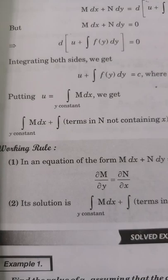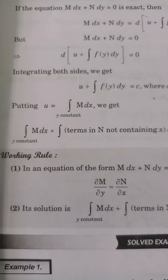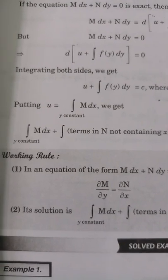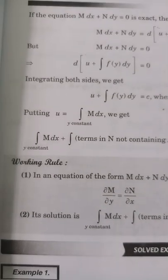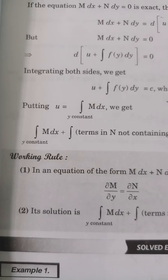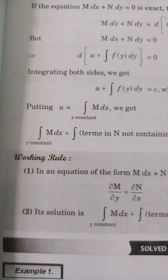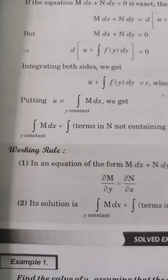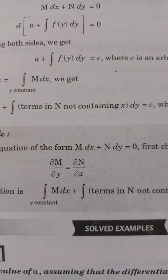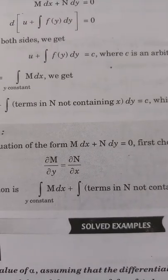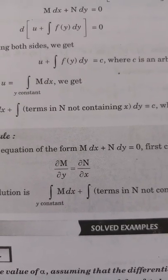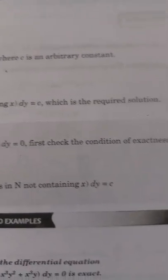Integrating both sides we get: u + ∫f(y)dy = c, where c is an arbitrary constant. Putting u = ∫M dx (treating y as constant), the required solution is: ∫M dx (treating y as constant) + ∫(terms in N not containing x) dy = c.